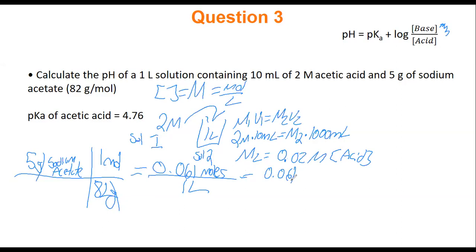Now we have everything we need to solve our Henderson-Hasselbalch equation. pH equals pKa, which is 4.76, plus log of our base concentration 0.061 divided by our acid concentration 0.02.